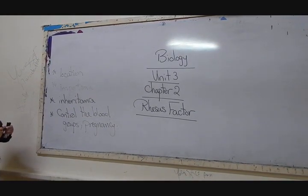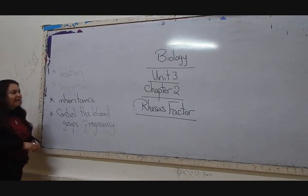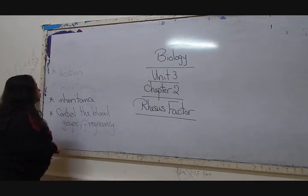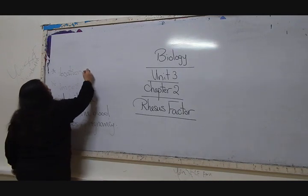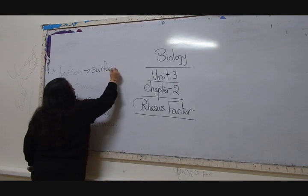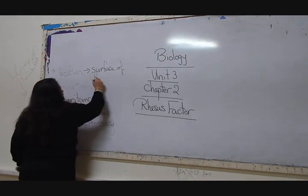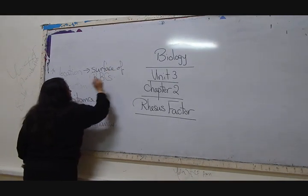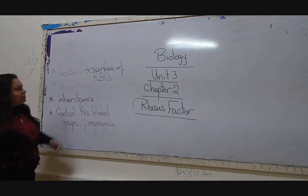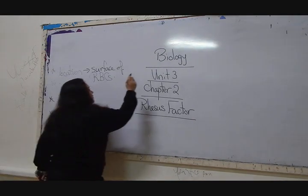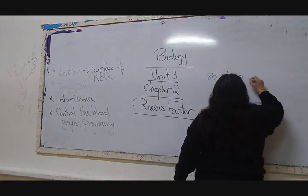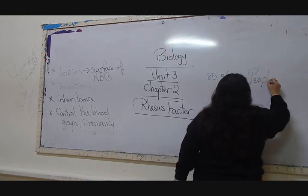Location. This factor is an antigen, that is to say it is a protein material. Where can we find it? We can find it on the membrane surface of the red blood cells. Does it present in all people? No, it is present in 85% of people.